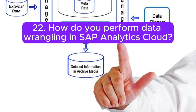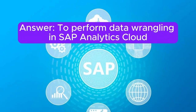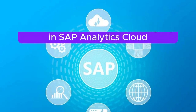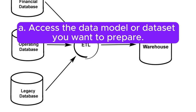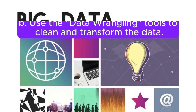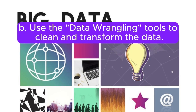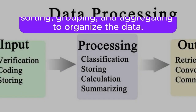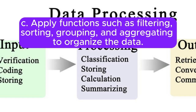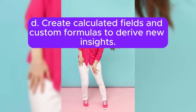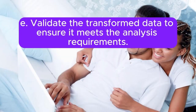Question 22: How do you perform data wrangling in SAP Analytics Cloud? Answer: To perform data wrangling in SAP Analytics Cloud: A. Access the data model or data set you want to prepare. B. Use the data wrangling tools to clean and transform the data. C. Apply functions such as filtering, sorting, grouping, and aggregating to organize the data. D. Create calculated fields and custom formulas to derive new insights. E. Validate the transformed data to ensure it meets the analysis requirements.